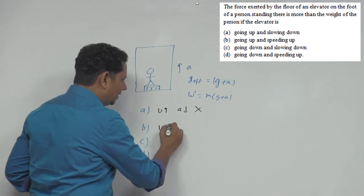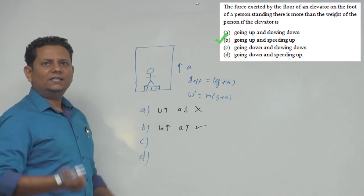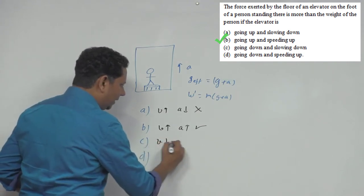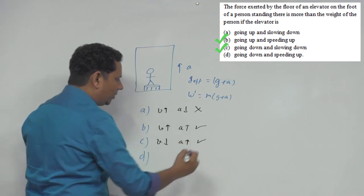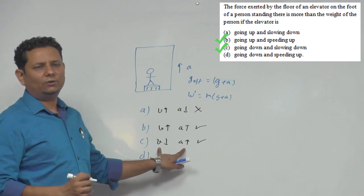Third is going down and slowing down. This means your velocity is downward and acceleration is upward, only then in this scenario will your velocity value be slowing down.